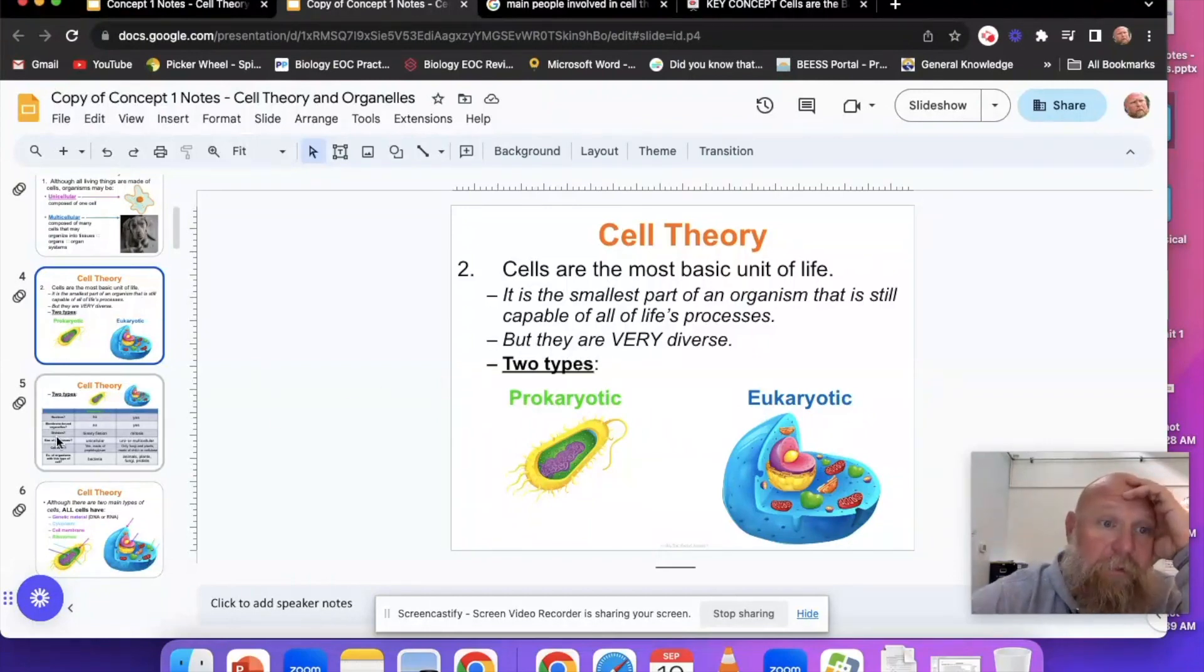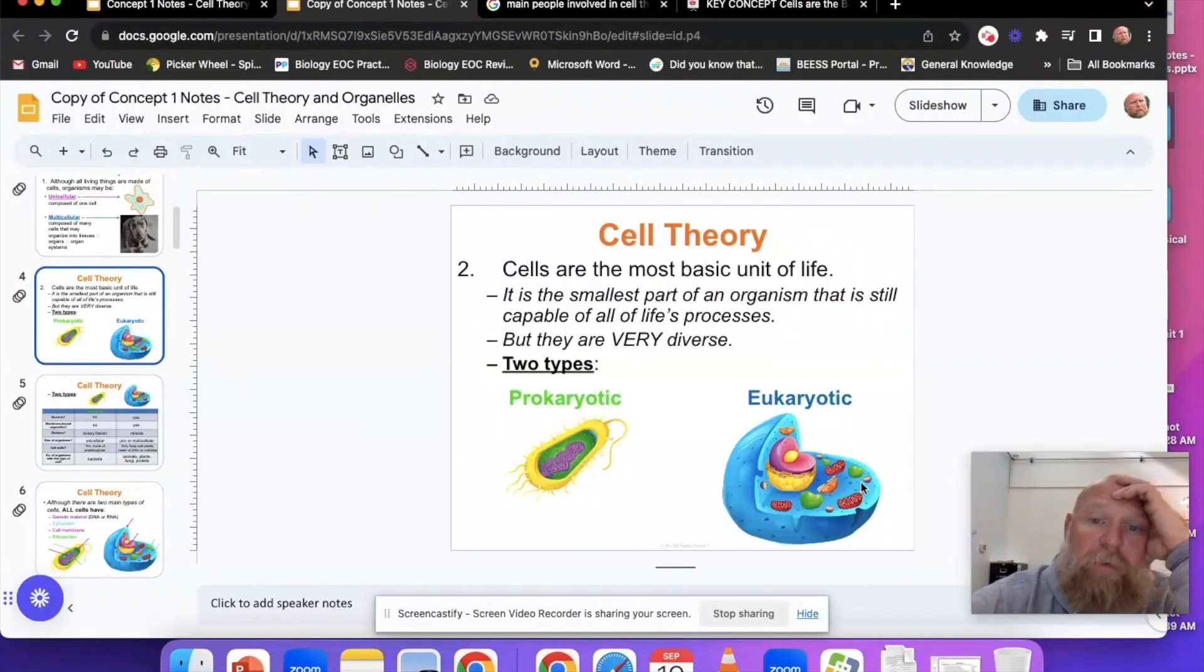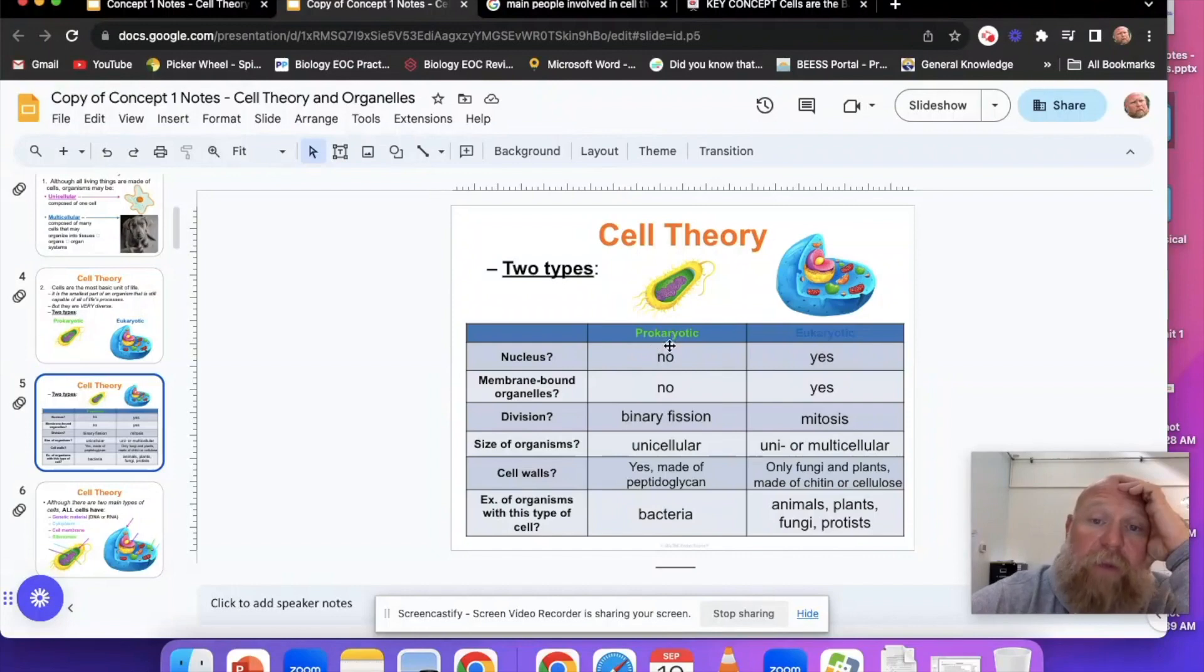So you have two types: prokaryotic and eukaryotic cells. A prokaryotic cell does not have a nucleus and does not have membrane-bound organelles. When I'm talking about membrane-bound organelles, each organelle in the cell has a membrane that surrounds it. The way that a prokaryotic cell divides is through binary fission. The size is basically all the time unicellular. Cell walls, yes, made of peptidoglycan, and the example is bacteria.